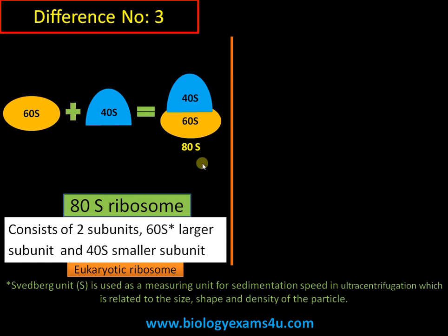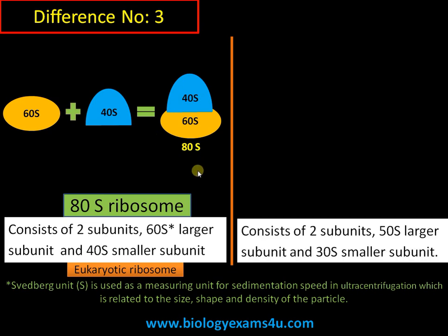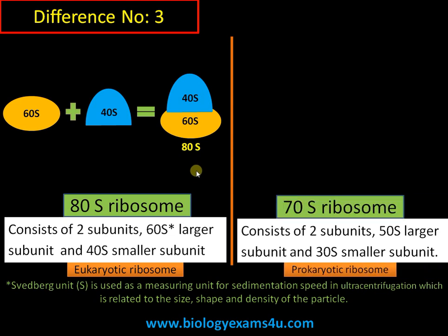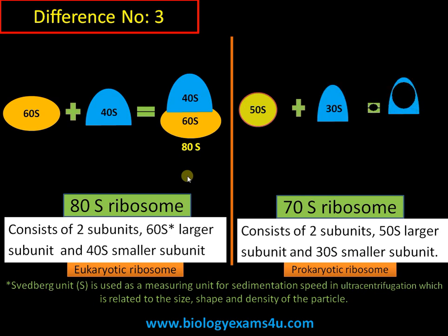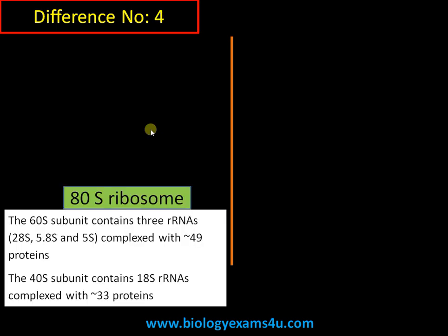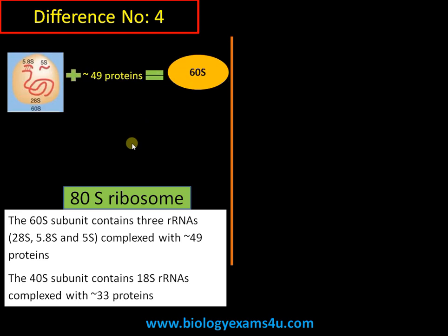The prokaryotic 70S ribosome consists of two subunits: a larger 50S subunit and a smaller 30S subunit, together forming the 70S ribosome. Magnesium ions are essential for the association and dissociation of these subunits.